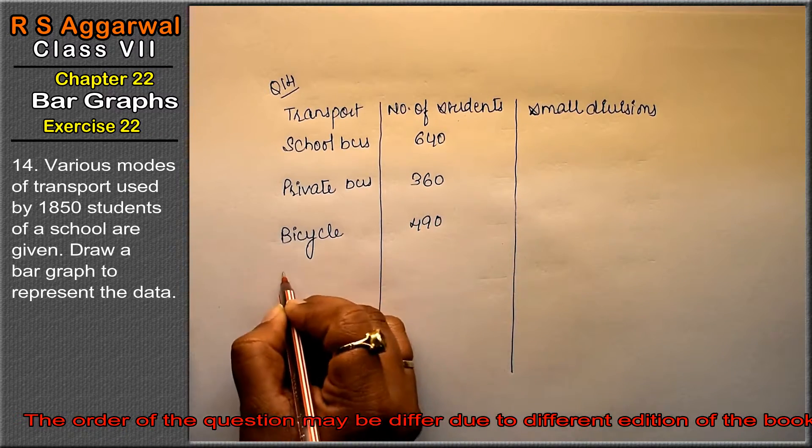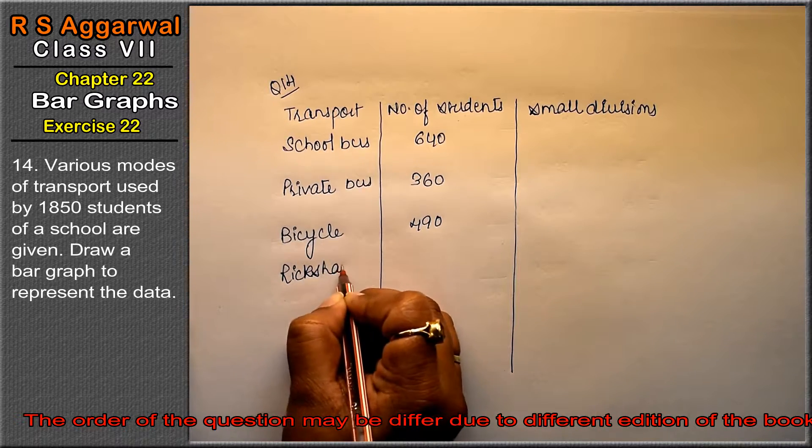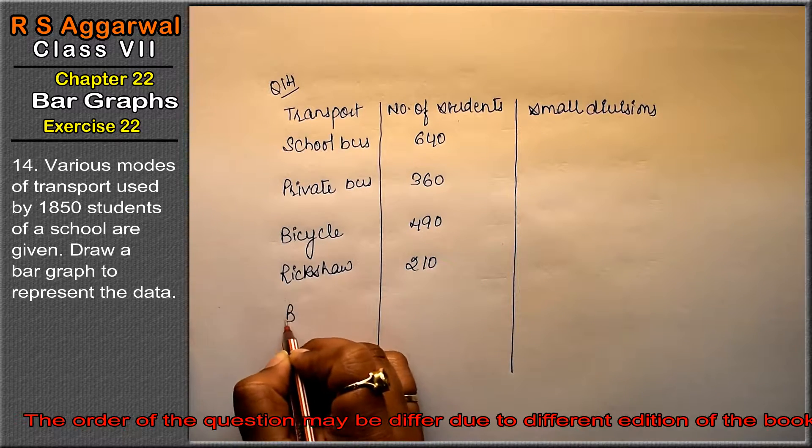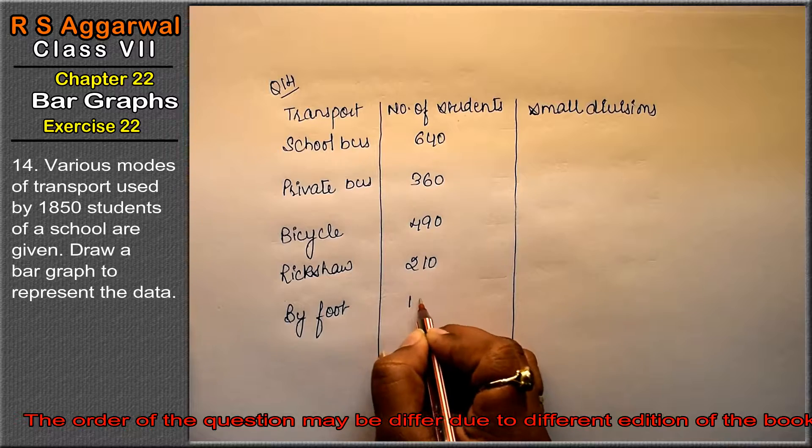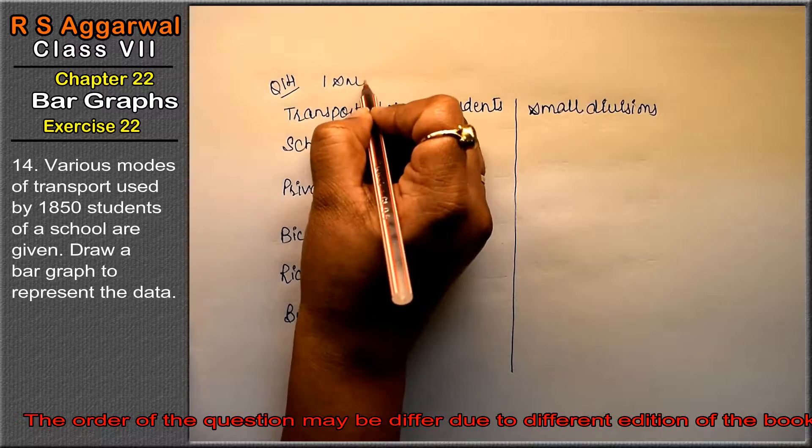Then rickshaw: 210, and by foot: 150. Right, we'll take one small division equals to 10.